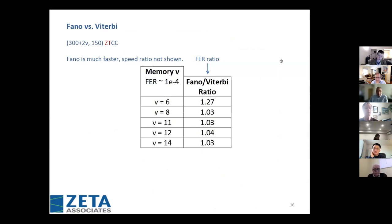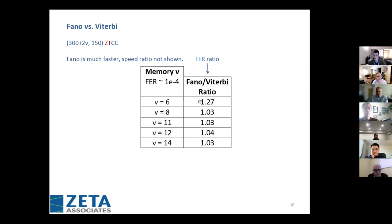Back to Fano versus Viterbi for zero-terminated codes — I wanted to show more data. Fano is much faster, and for these memory sizes, Fano has the same performance. I simulated 400 error events, and except for memory-6 where there seems to be a slightly worse frame error rate, all other memory sizes give nearly the same performance between Fano and Viterbi.